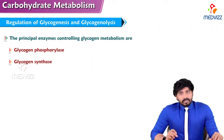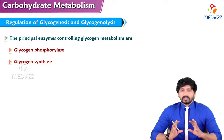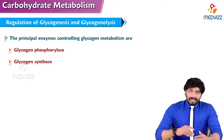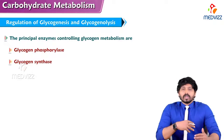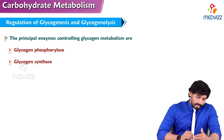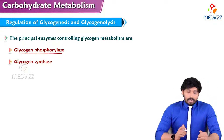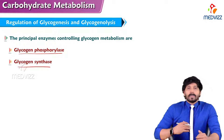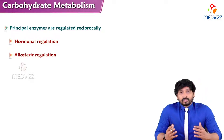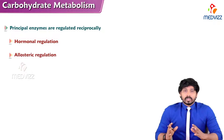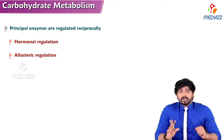Hello everyone, Dr. Suresh here. In this video, we'll be talking about the regulation of glycogen synthesis and glycogen breakdown. From our previous videos, we have learned that the main enzymes responsible for glycogen synthesis and glycogen breakdown are glycogen phosphorylase and glycogen synthase. Glycogen phosphorylase is useful in breaking down glycogen and glycogen synthase is useful for making glycogen from glucose. There are two types of regulations: hormonal regulation and allosteric regulation.